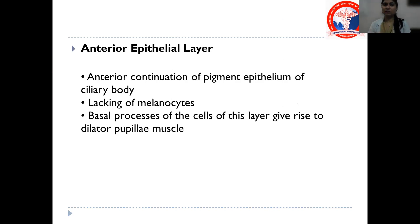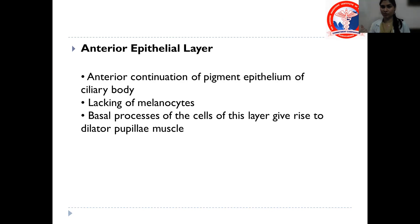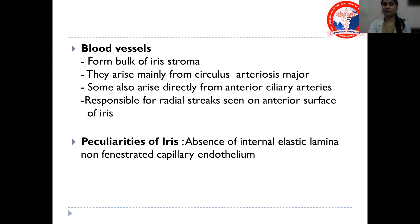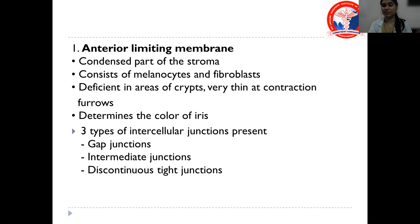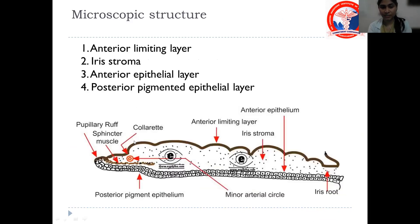The anterior epithelial layer is the anterior continuation of the pigment epithelium of the ciliary body. It does not have any melanocytes, and the basal processes of the cells of this layer give rise to the dilator pupillary muscle. It is not responsible for the pigment of the iris — the color of the iris depends on the anterior limiting membrane.